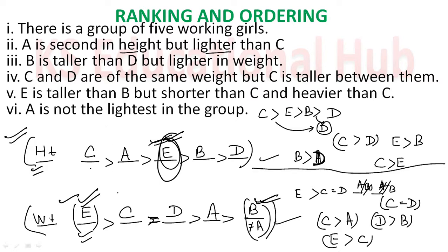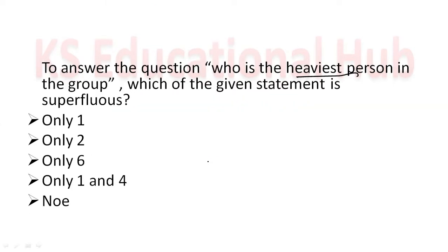Statement A: 'A is second in height but lighter than C' — we need this. Statement B: 'B is taller than D but lighter in weight' — we need this too. Statement C: 'C and D are of the same weight but C is taller' — we need to know same weight, so this is needed. Statement D: 'E is taller than B but shorter than C, and heavier than C' — we need this as well. Statement E (statement 6): 'A is not the lightest in the group.' When we look at this, to find the heaviest person, E was always going to be heaviest — that was already clear. The position of A versus B at the bottom didn't affect finding the heaviest. So statement 6 is superfluous. The right answer is: only statement 6.